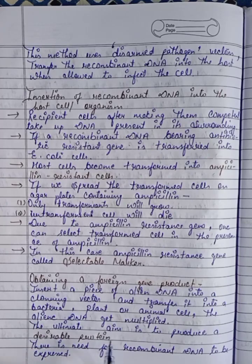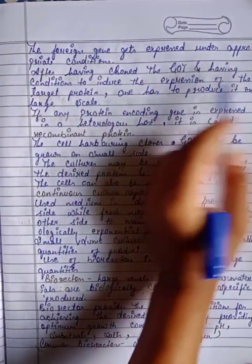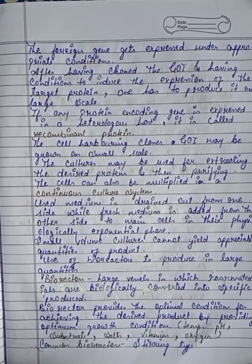The ultimate aim is to produce a desirable protein. For this, the recombinant DNA needs to be expressed. The foreign gene will express itself only under the appropriate conditions, giving us the desirable protein.